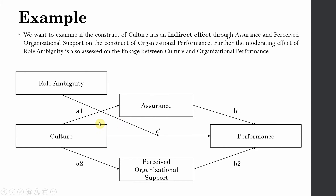The example model for this session has one IV, one DV, two mediators, and one moderating variable moderating the direct relationship. Culture influences performance through two mediators — assurance and perceived organizational support — whereas role ambiguity moderates the relationship between culture and organizational performance. The higher the role ambiguity, the weaker the relationship between collaborative culture and organizational performance.